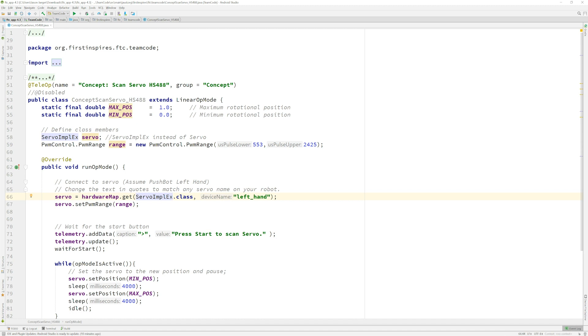And then finally, where the rubber hits the road, we can call the set PWM range, which is only a method that we can use because we changed the class from the servo class. And now we have this set PWM range method that we can use, and we're passing in that range variable that we created up above.